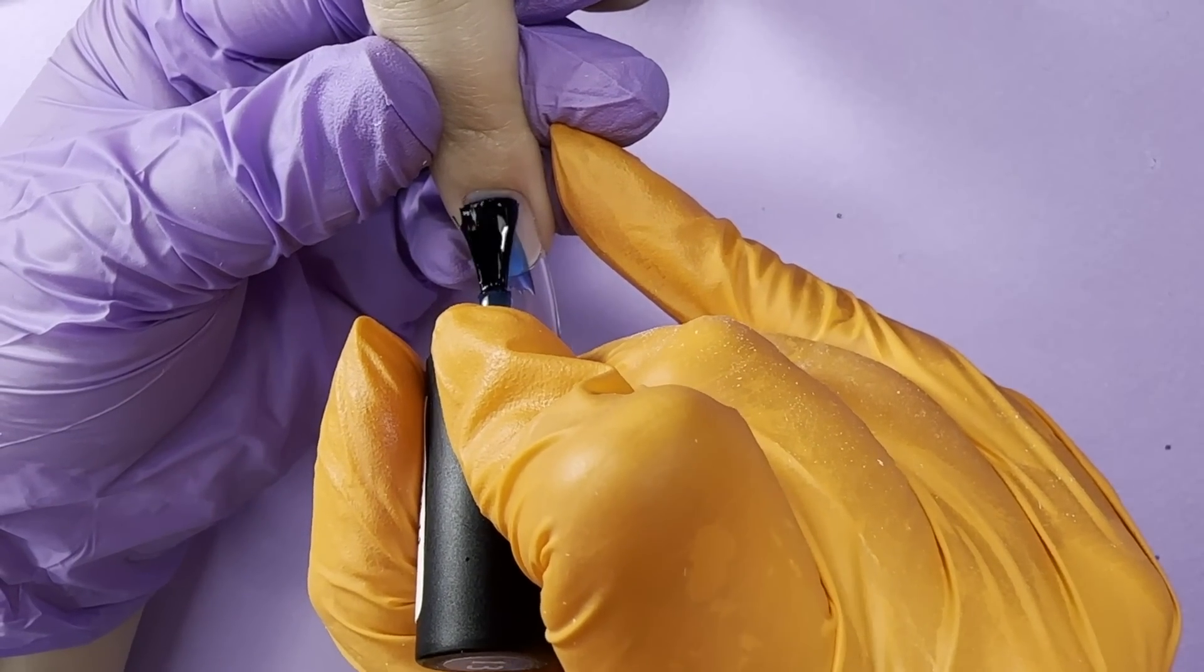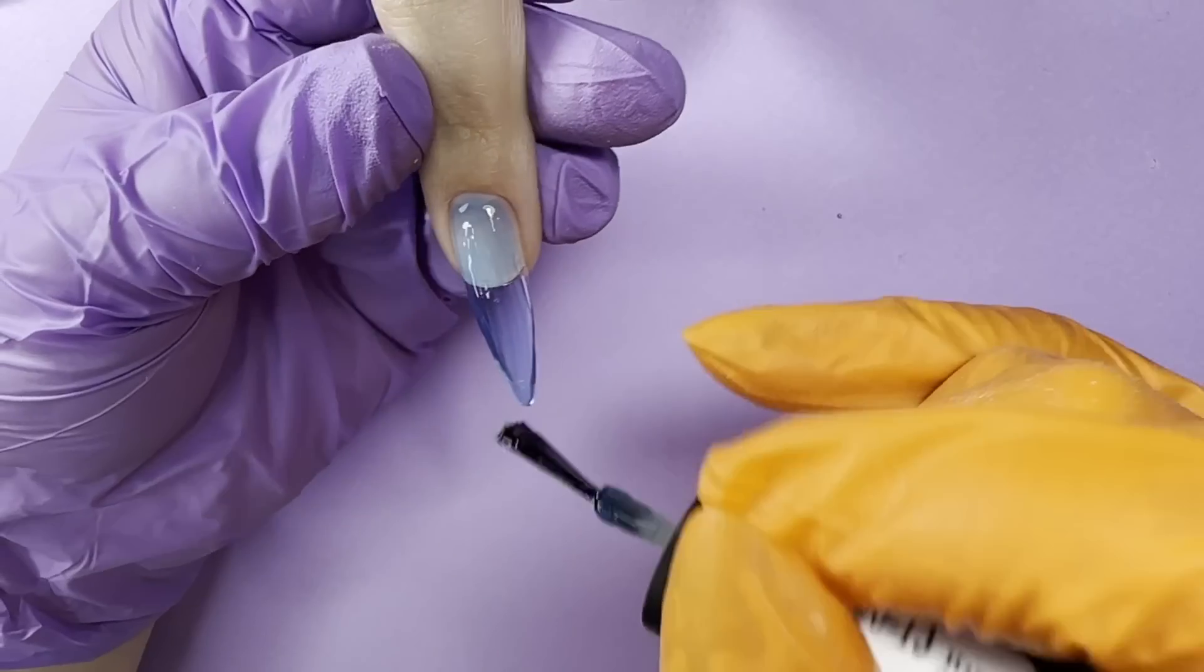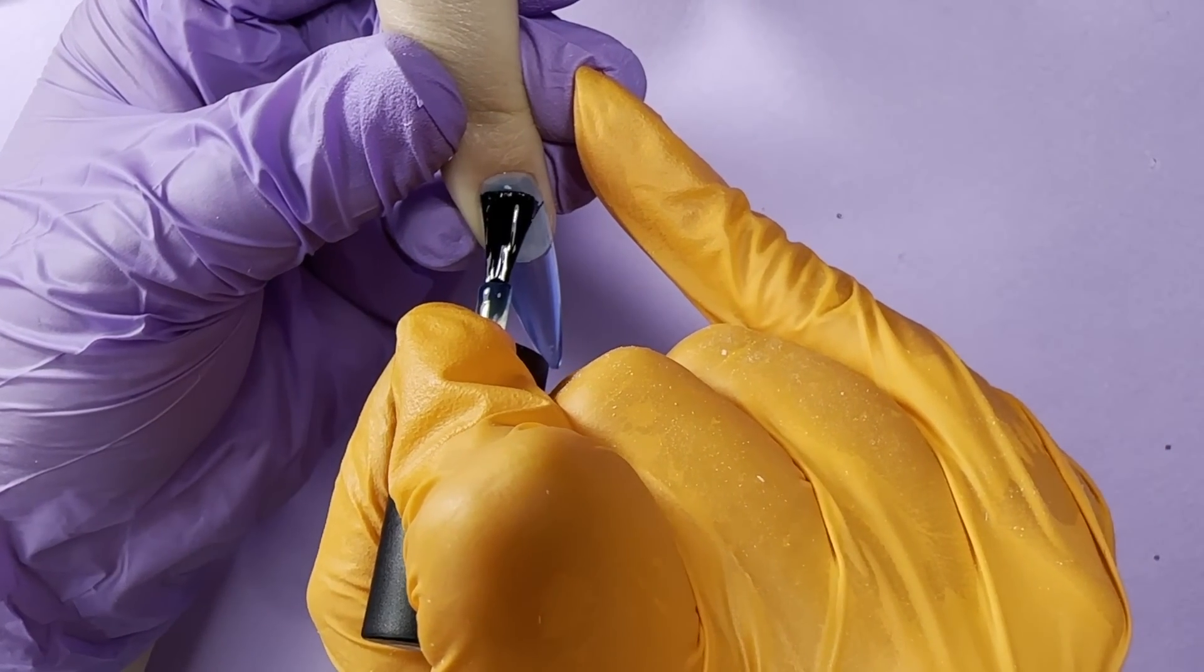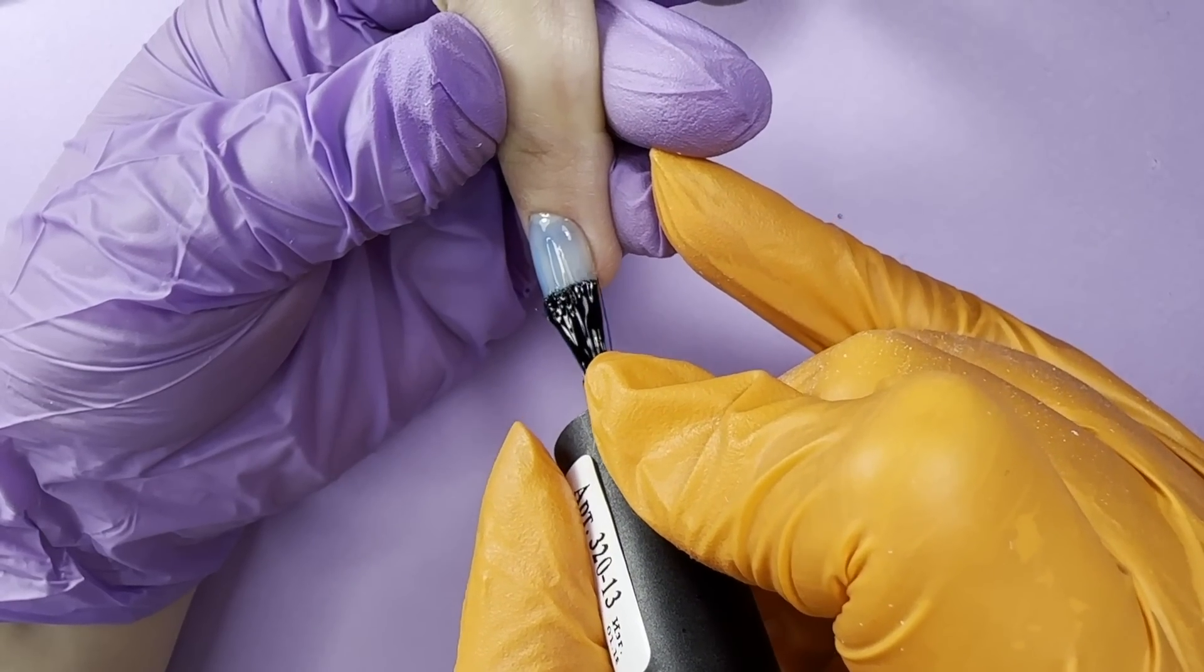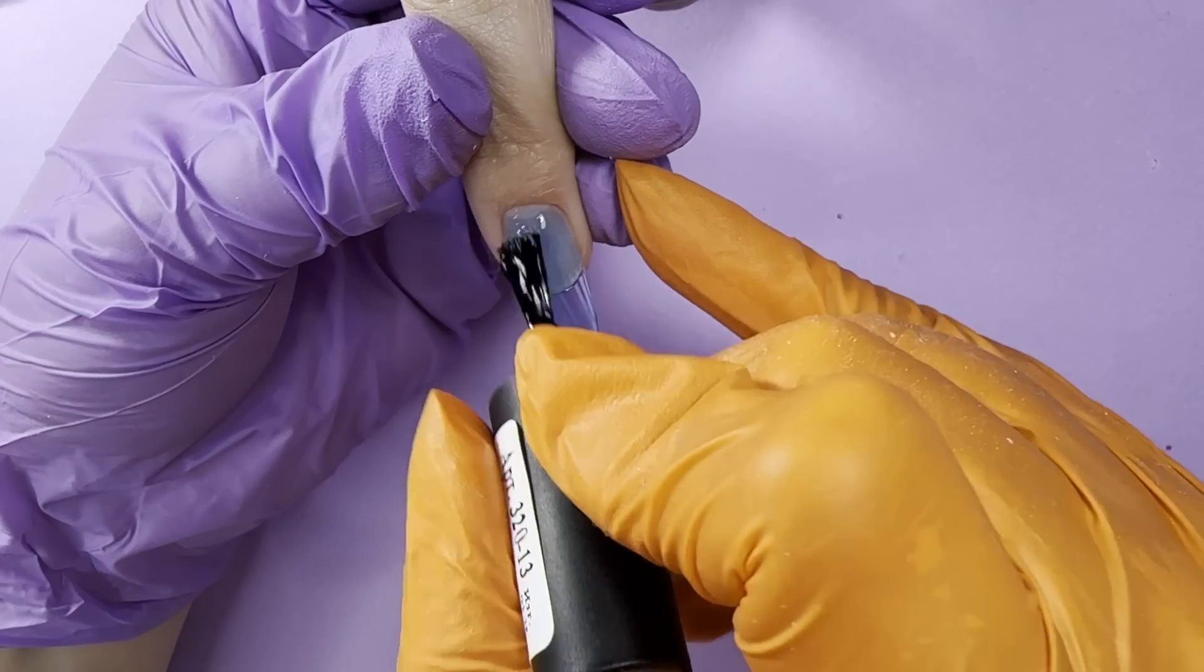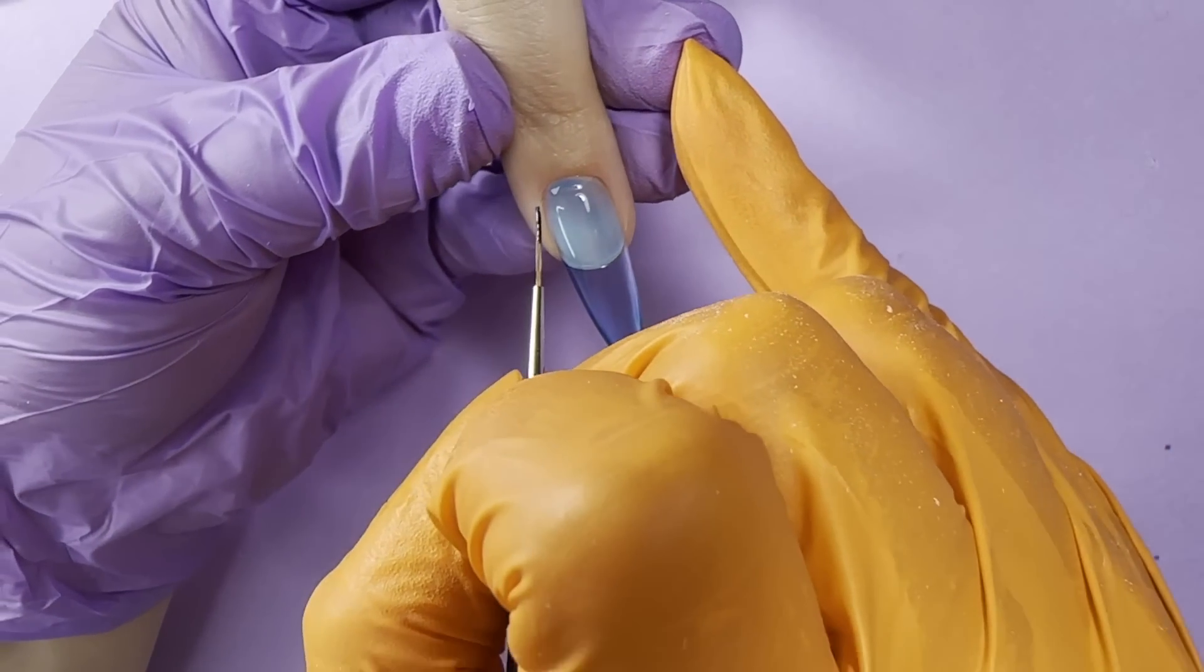If you will use regular colors for this design, you will not be able to see the bubbles. So it is better to use some semi-transparent ones or even better jelly colors. We decided to use blue color for this hand to recreate the look of bubbles in the ocean or in the sea.